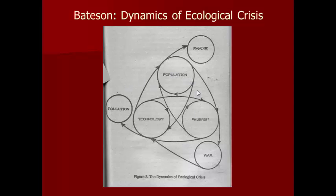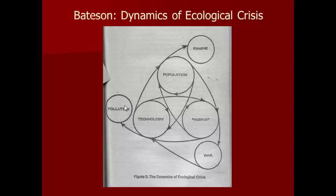Bateson's thinking is more heuristic than a testable model. He describes a set of interacting systems — population dynamics, technology, and hubris (the arrogance that humans can control their environments) — that feed on each other and throw off side effects like famine, war, and pollution. Just think about the effect of cars: the more people you have, the more cars you have; cars make us think we can get around on our own and conquer the world, but they produce a lot of pollution, and the money spent on cars isn't being spent on things like preventing famine.